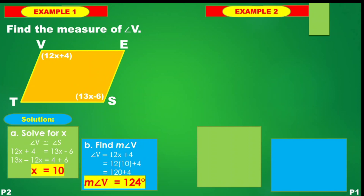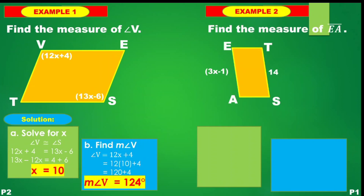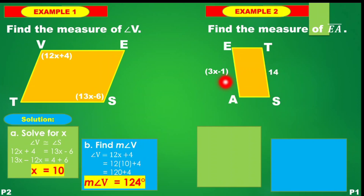Let's move on to example number 2. Find the measure of side EA. Here is side EA, and side TS is equal to 14. If you take a look, they are opposite sides. So the property we apply here is property number 1.